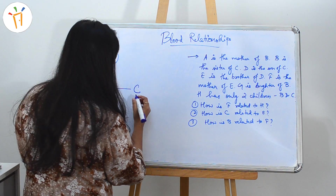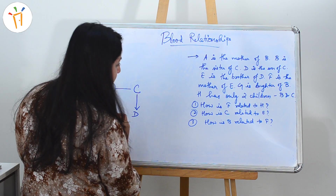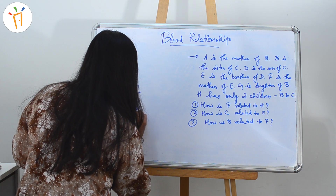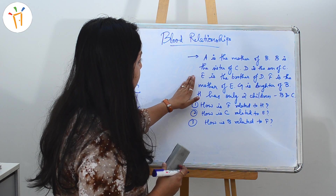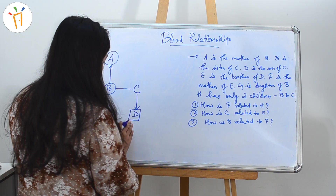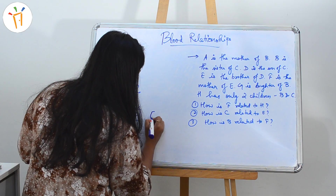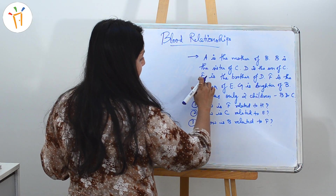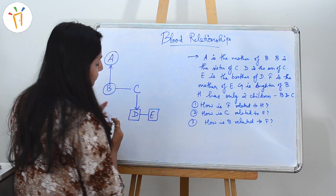E is the brother of D. If E is the brother of D, then E and D would be siblings, and since E is the brother, E is male. We'll denote the sibling relationship with a single line, so D and E are siblings.